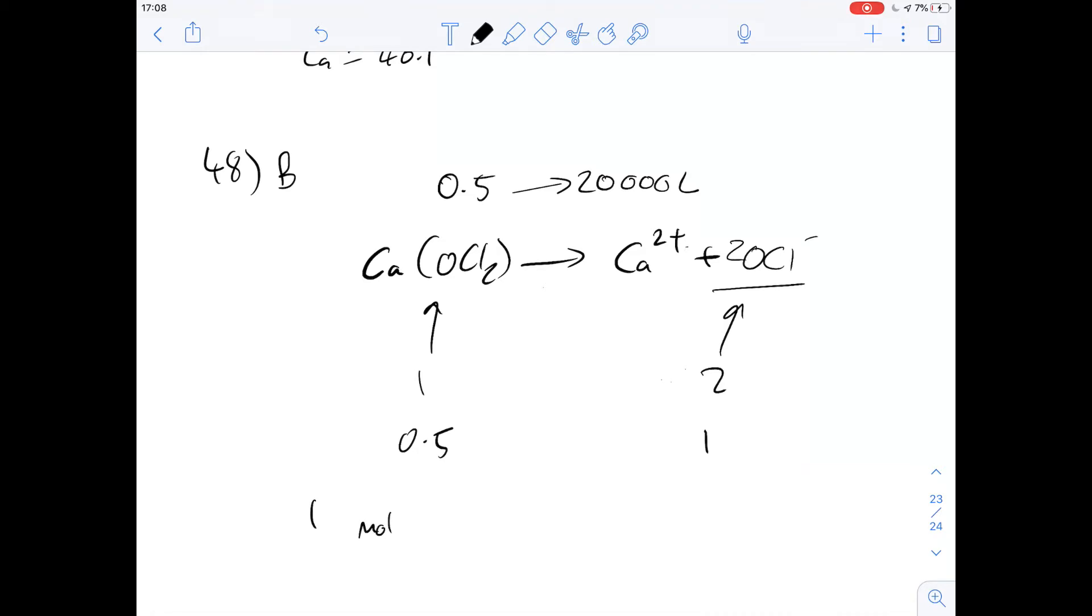So the concentration is going to be the number of moles over the volume, so it's 1 over 20,000, which is going to be 5 times 10 to the minus 5. That gives us an answer then for 49 of B.